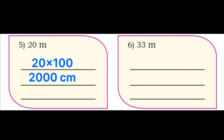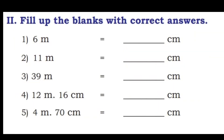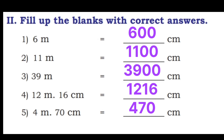Second part: fill in the blanks with correct answers. First: 6 meter is equal to 600 centimeter. Second: 11 meter is equal to 1,100 centimeter. Third: 39 meter is equal to 3,900 centimeter. Fourth: 12 meter 16 centimeter is equal to 1,216 centimeter. Fifth: 4 meter 70 centimeter is equal to 470 centimeter.